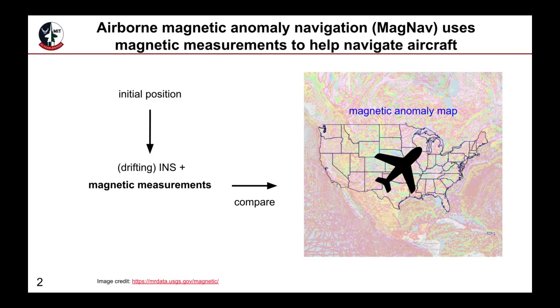The basic idea for airborne magnetic anomaly navigation, or MAGNAV, is to use magnetic measurements taken by the aircraft to assist with navigation. The simplified concept of operations is to start with a known initial position, such as from GPS, at which point it is assumed that position information is no longer available, due to GPS jamming for example.